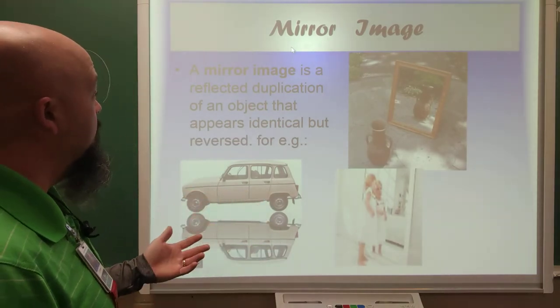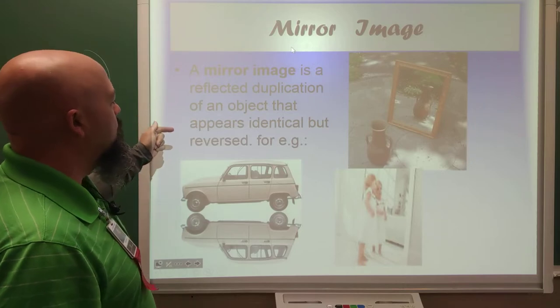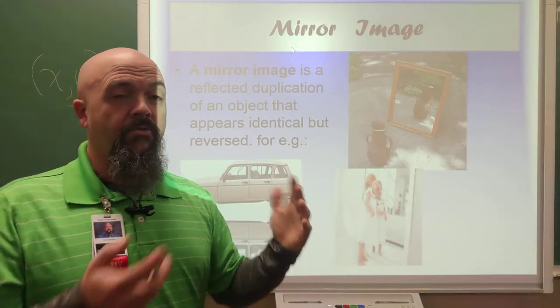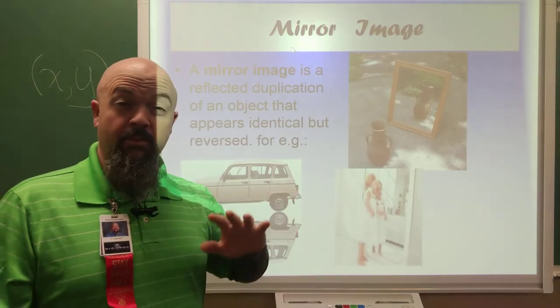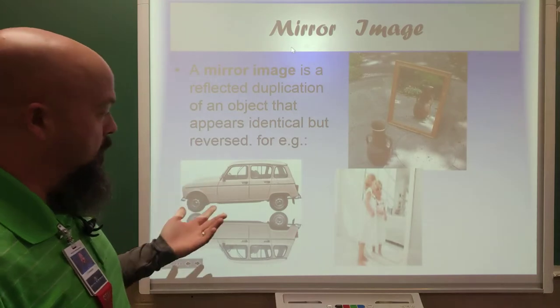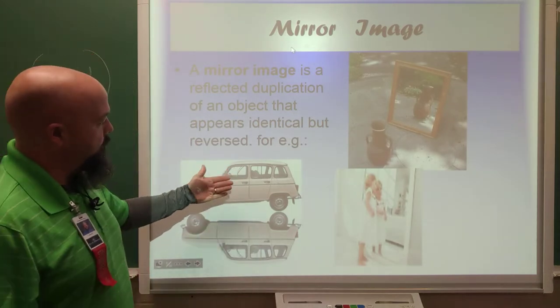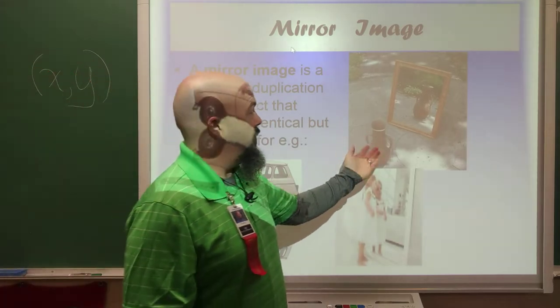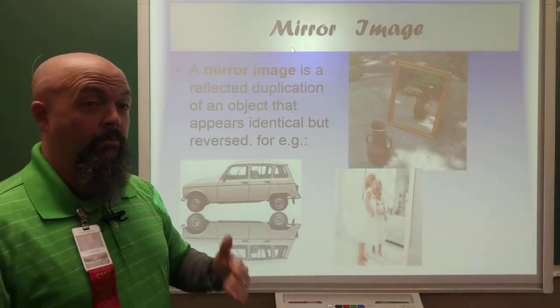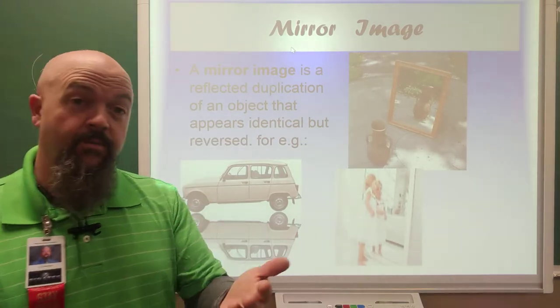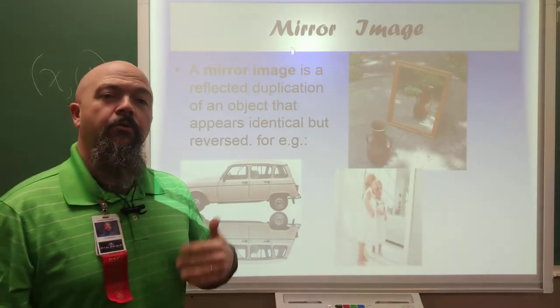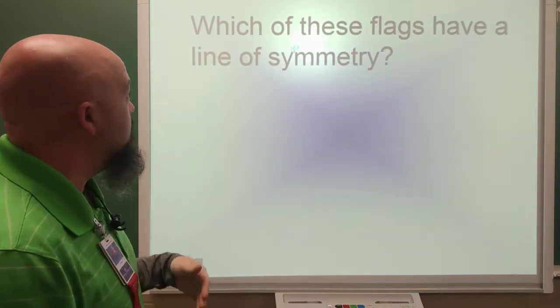So, mirror image is a reflective duplication of an object that appears identical, but reversed. When we talked about the transformation of the reflection, reflection being a flip, this is what we talked about, mirror image. If mirror image occurs on the other side, so this, obviously, was a reflection. This is a reflection. Her, she's a reflection. You're seeing the mirror image. You're watching some videos, maybe, and you notice the shirts are always written backwards, because you're looking at a reflection. Those are mirror images.